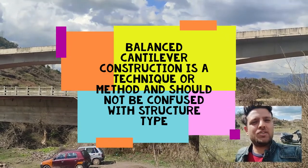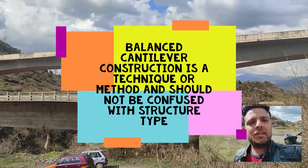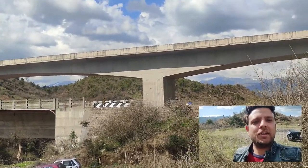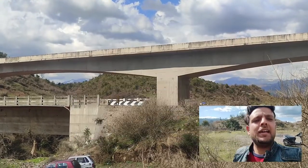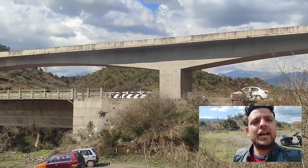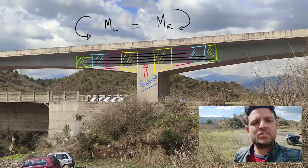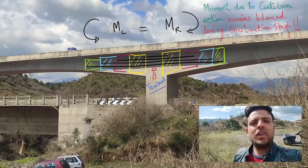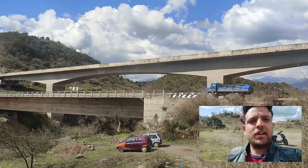There is a construction methodology known as balanced cantilever construction. Please note that this is a technique of construction and not a type of structure — the type of structure is actually a cantilever. In balanced cantilever construction, as the name suggests, left and right span segments are lifted simultaneously and put in place through pretension tendons, which hold them in place during initial stages. During these initial stages, the structure actually behaves as a cantilever member, and the moments developed on the left and right during lifting of individual segments are balanced.